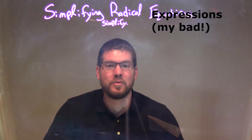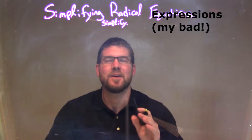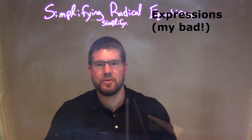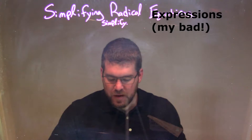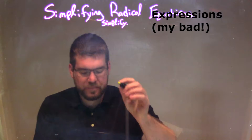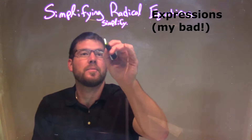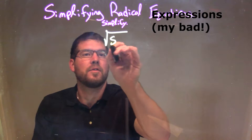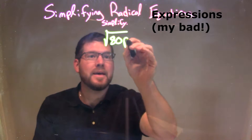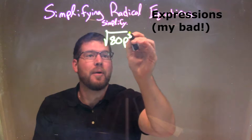Hi, I'm Sean Gannett, and this is MinuteMath. Today we're going to learn about simplifying radical equations. So if I was given this problem to simplify: the square root of 80p to the third power.